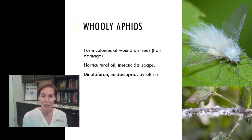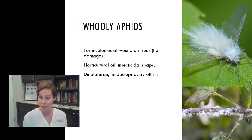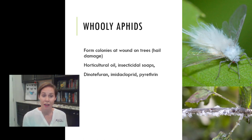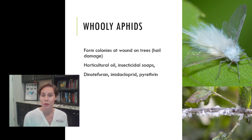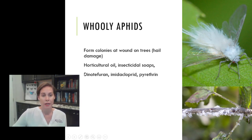Woolly aphids are interesting-looking insects — they look like little fuzzy fairies. They are actually an aphid but they tend to form colonies around wounds on trees, and in Texas this almost always occurs after significant hail damage. You'll see all this cottony soft stuff — these are not mealybugs or scales, these are woolly aphids. They're pretty susceptible to pesticides, so oils and soaps should manage them — you have to spray exactly where they are. Dinotefuran, imidacloprid, and pyrethrin are other non-organic options if you need a quick knockdown. Those non-organic options control all life stages, whereas oils and soaps might not get the eggs.